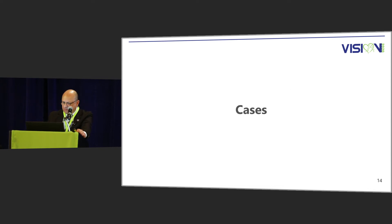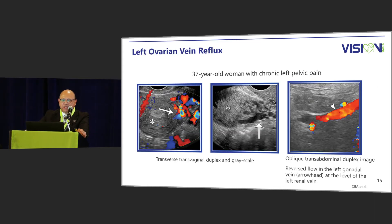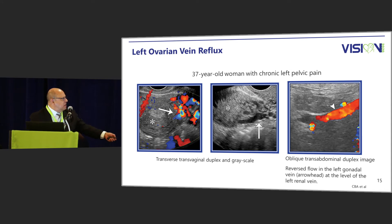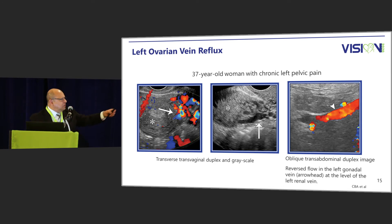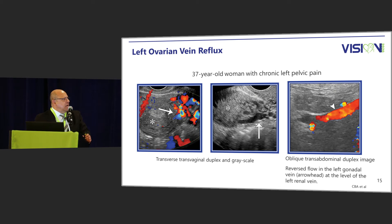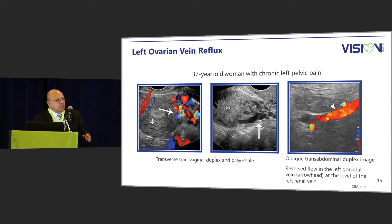This is a 37-year-old woman with chronic left pelvic pain. On transvaginal ultrasound you can see the colored dilated pelvic veins in the left parametrium space. The asterisk demonstrates the uterus and on grayscale you can see the large hypoechoic vessel. On duplex imaging, the dark hypoechoic area represents the left renal vein, and the red portion demonstrates that flow is away from the renal vein, indicating venous insufficiency or reflux.